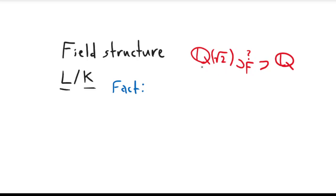In the last video I mentioned we have this example of Q adjoined square root of two, and there was this question of whether there is a proper intermediate subfield in between Q adjoined square root of two and Q. To help us answer that, I'm going to give another fact from Galois theory — I'm not proving most of these facts just for the sake of time, but I would like to state them.